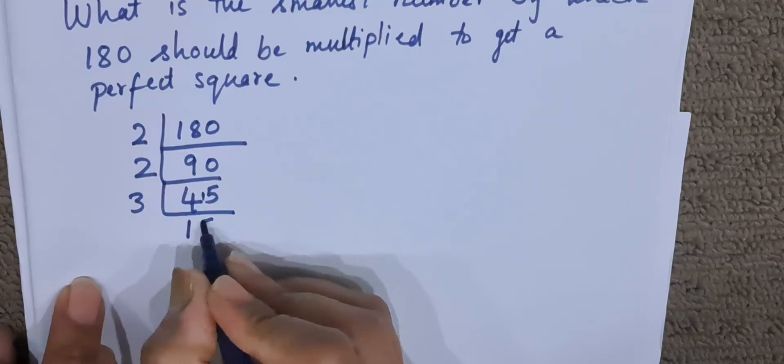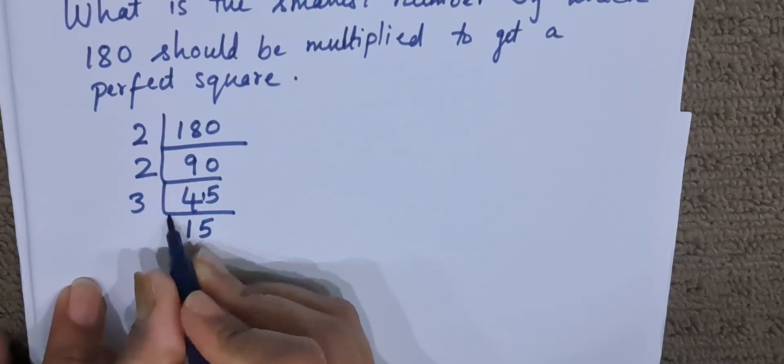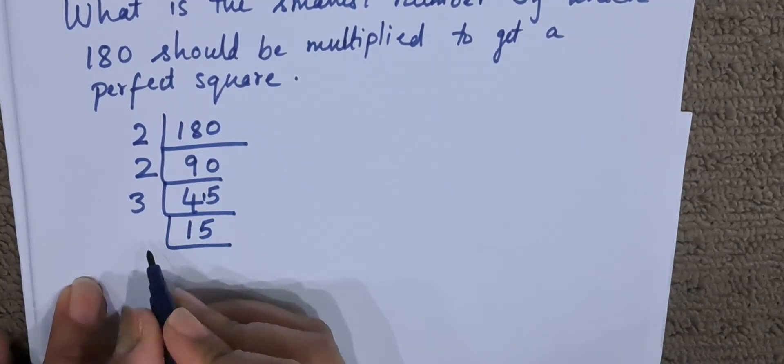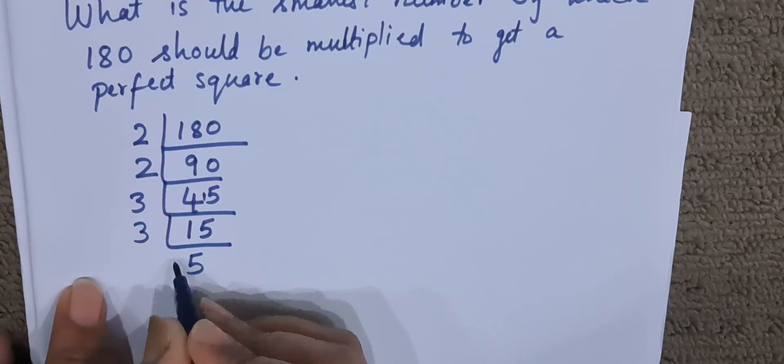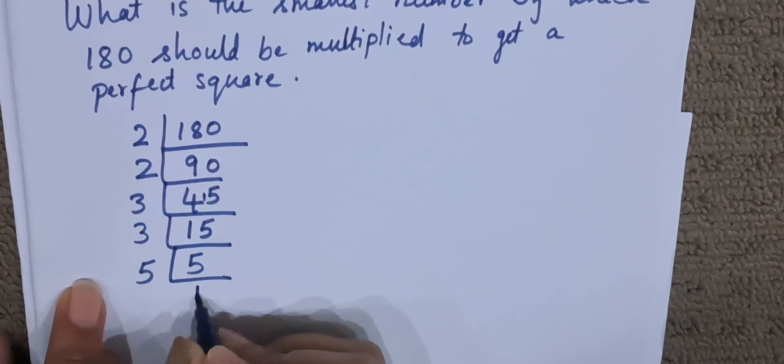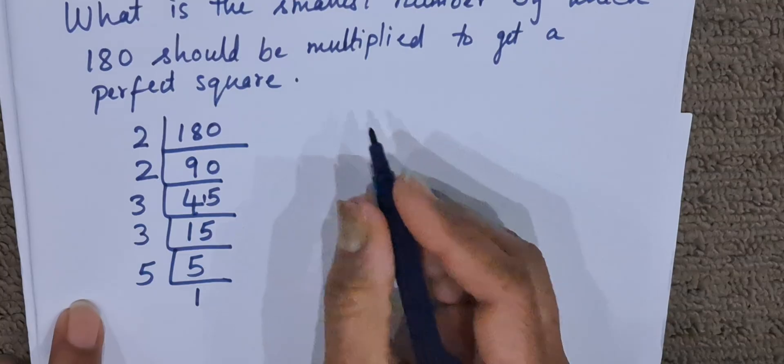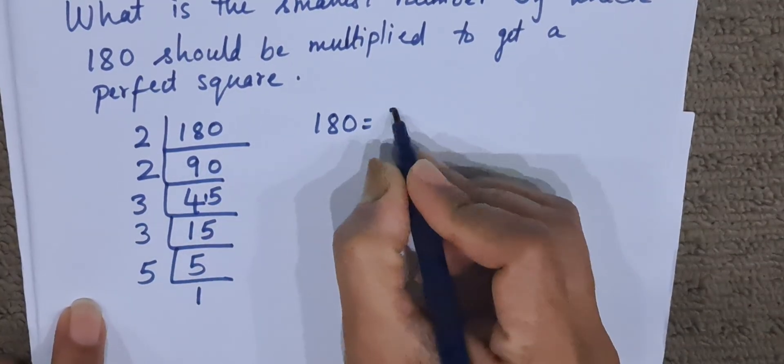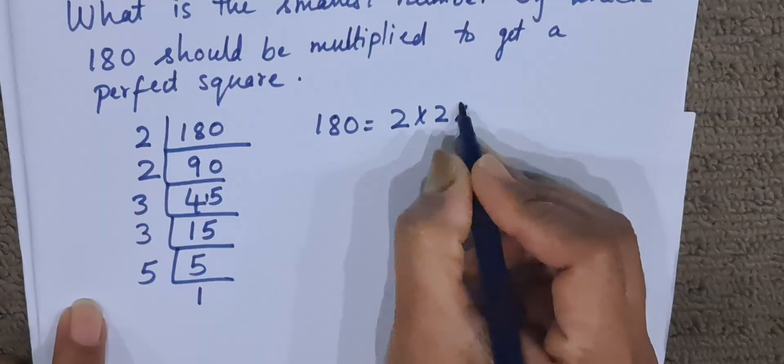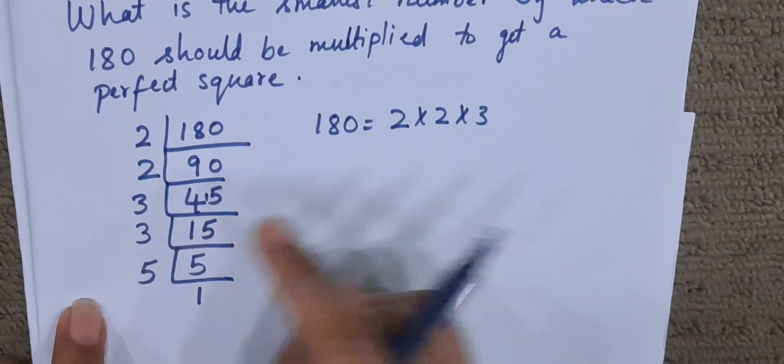Now 15 again is divisible by 3. 3 fives are 15. Now we have 5. 1 fives are 5. So we will write down all the factors of 180. The factors of 180 are 2 × 2 × 3 × 3 × 5.